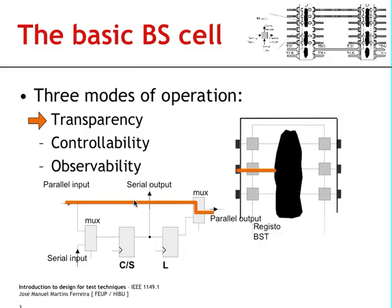The first mode is the so-called transparency mode. This is how the cells are connected during normal system operation. When you power up the board, all cells will behave in transparent mode and everything will happen as if there was no boundary scan infrastructure present.